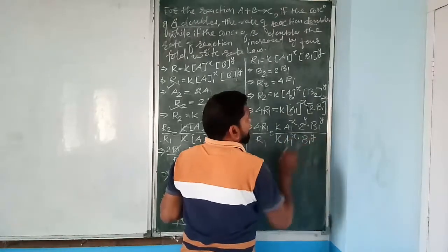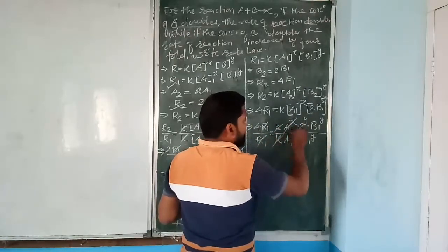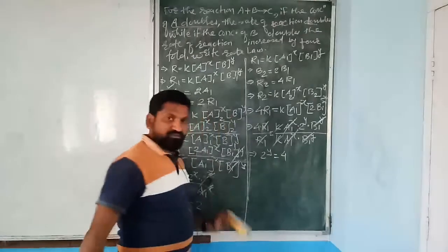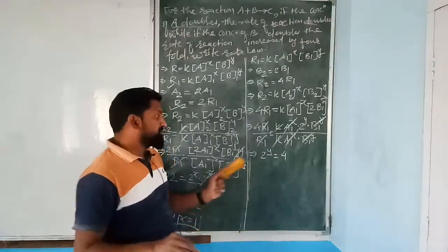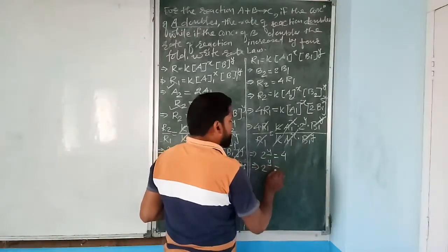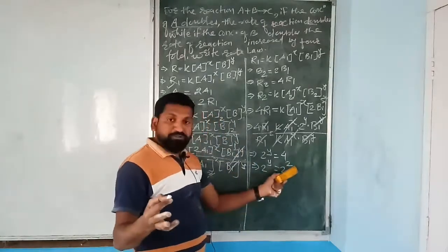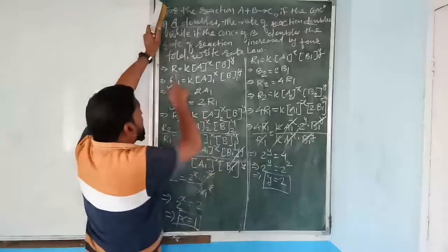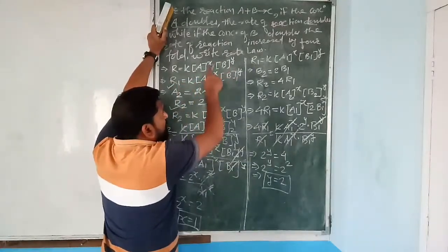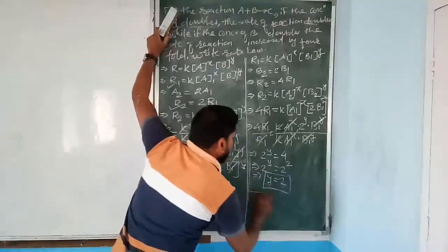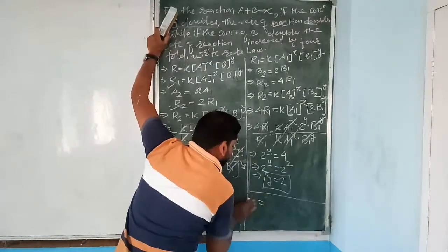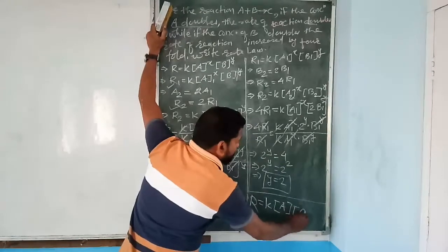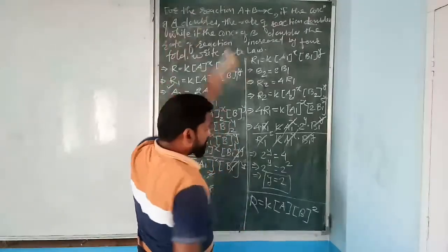Small question (b): how does the reaction rate change if the concentration of B is decreased by a factor of 3? If B decreases by factor 3, then B₂ = (1/3)B₁. Forming R₂/R₁: K cancels, A unchanged so A terms cancel. We get R₂/R₁ = (1/3)^y = (1/3)¹ = 1/3. Therefore the new rate R₂ = (1/3)R₁ — the rate decreases by 3 times.